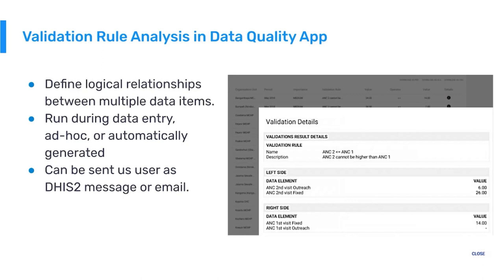That's what we see being indicated here, where we have 32 ANC2 visits being reported and only 14 ANC1 visits being reported. In most countries, this would be evidence of a data quality issue somewhere in my ANC2 visits count. This can be run at different points — at data entry while the user is entering data, ad hoc by any user with access to the application, or it can be automatically generated. When automatically generated or done ad hoc, it can send alerts and notifications automatically to users who can actually address them.